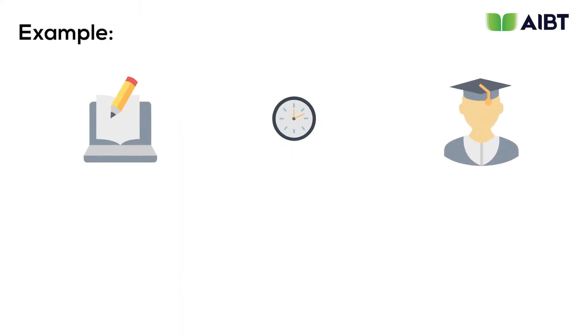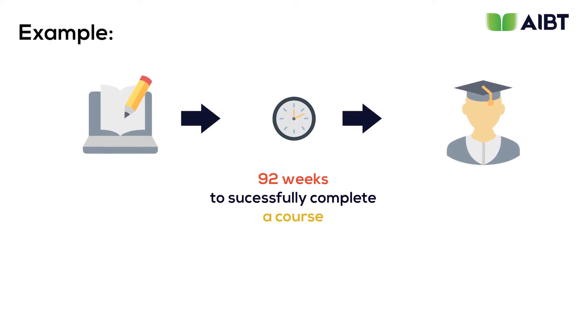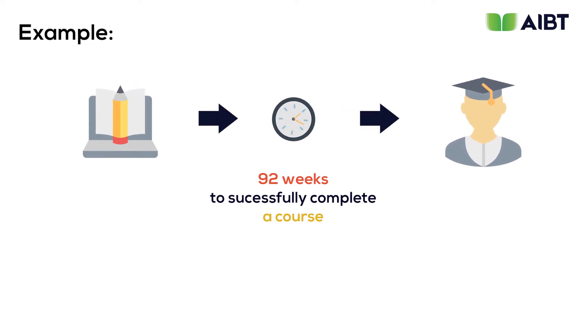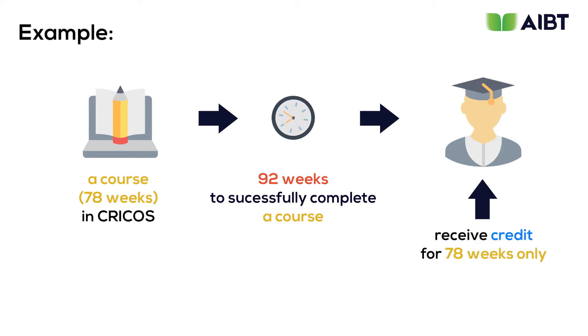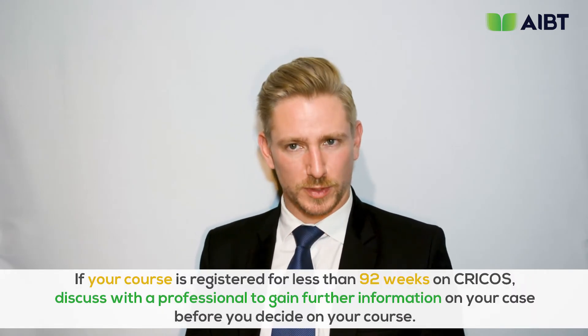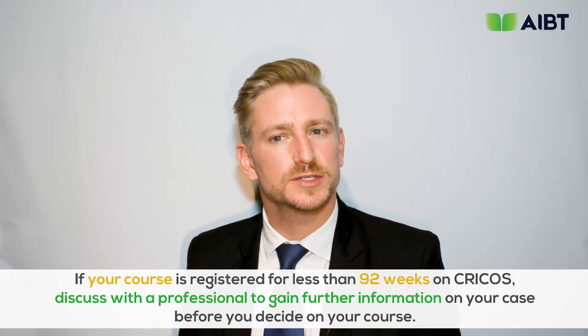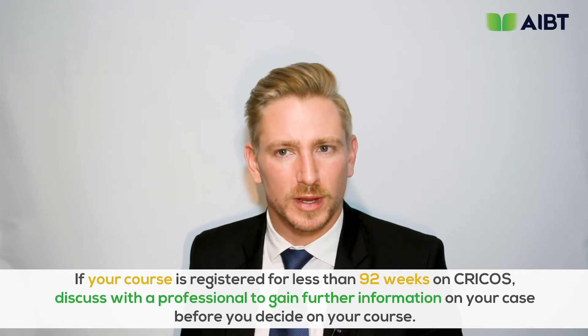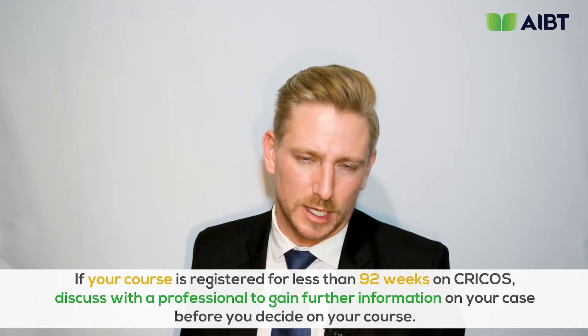In the example given, if you take 92 weeks to successfully complete a course that CRICOS states should take 78 weeks, you will only receive credit for 78 weeks. Therefore, you cannot extend your course to meet the 92-week requirement. It's also important to note that if you fail any subjects, they will not count towards the 92-week requirement. So if your course is registered for less than 92 weeks on CRICOS, discuss with a professional to gain further information before deciding on that course.